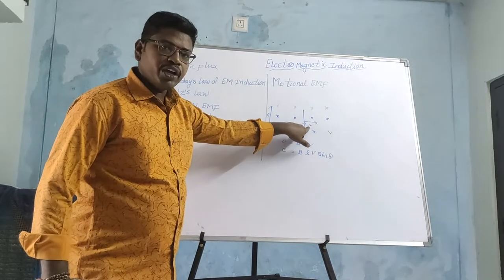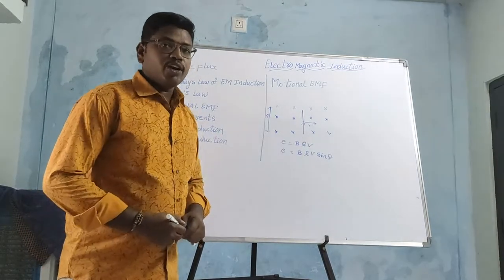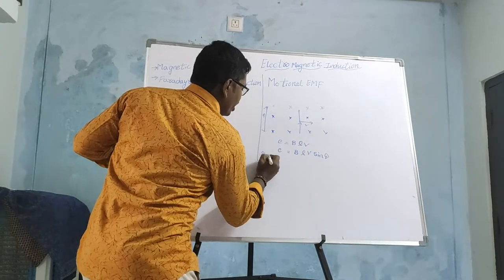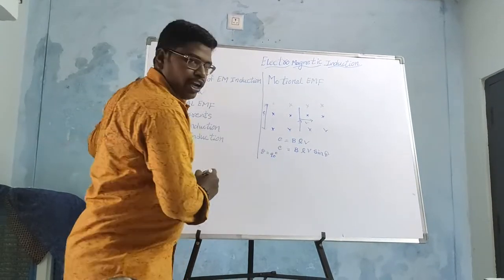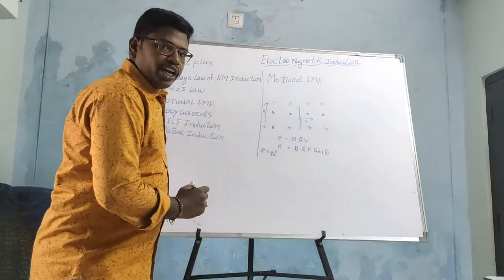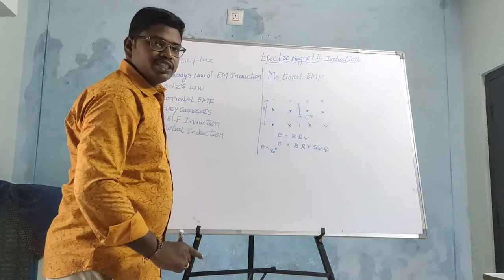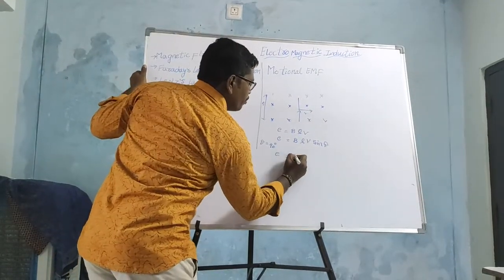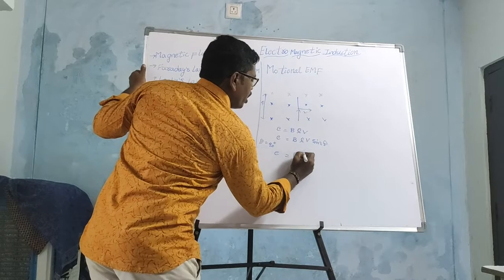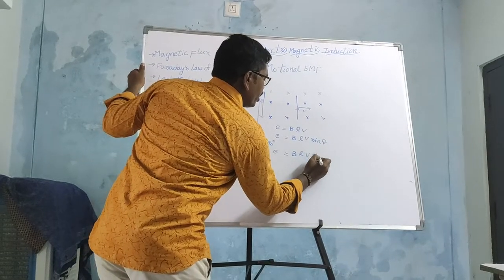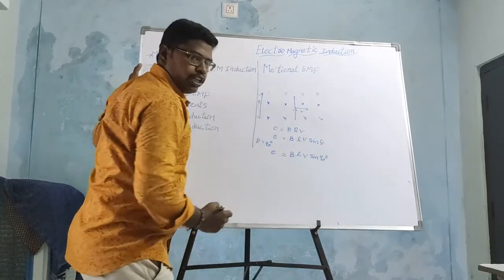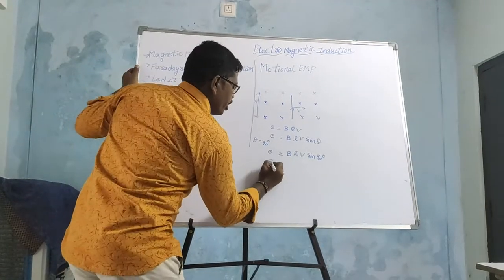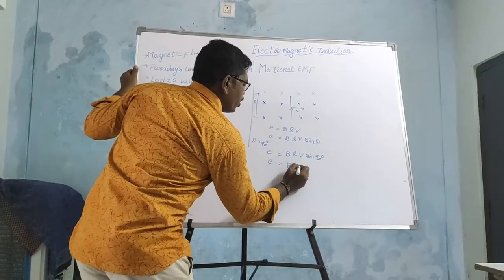If the velocity is moving perpendicular to the magnetic field, then theta is 90 degrees. If we take theta = 90 degrees, what is the EMF across the ends of the conductor? That is E = BLV sin 90. Since sin 90 = 1, we get E = BLV.